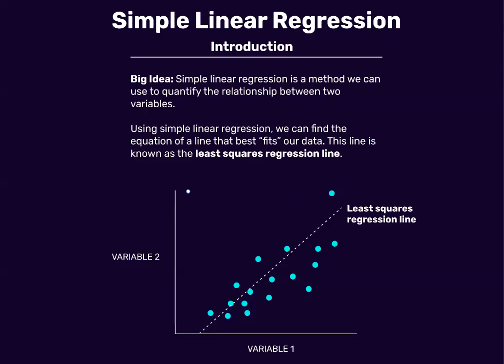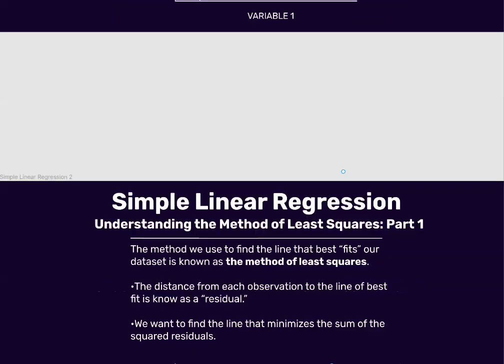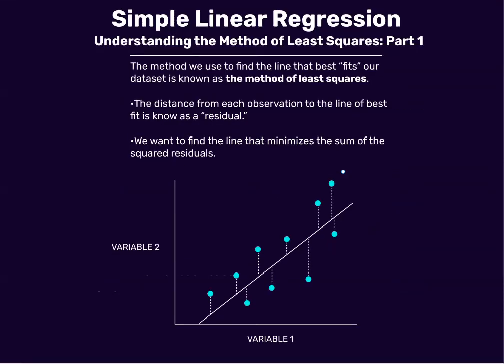If we imagine a scatter plot with one variable along the x-axis and another variable along the y-axis, the least squares regression line is the line that best fits the data, or best captures the trend going on with this data. To understand how this line is actually calculated, we need to understand the method of least squares — the method we use to find the line that best fits our data set.